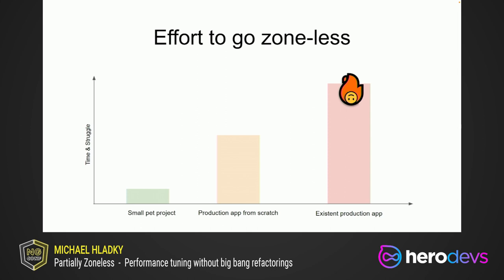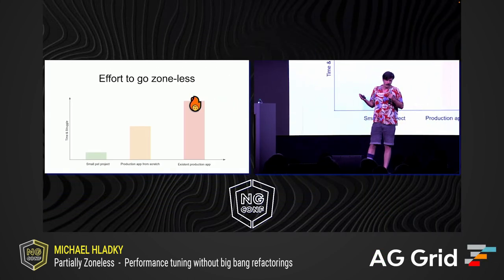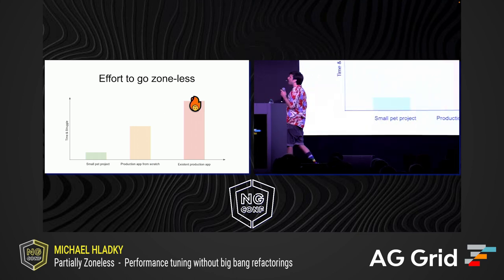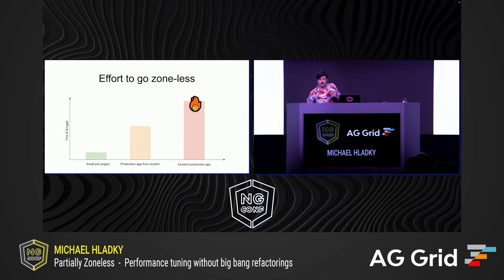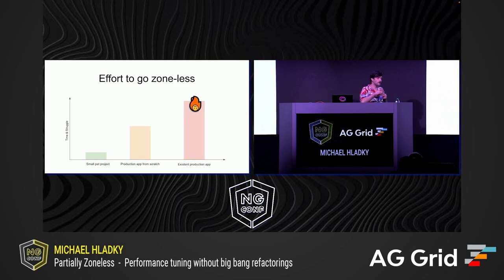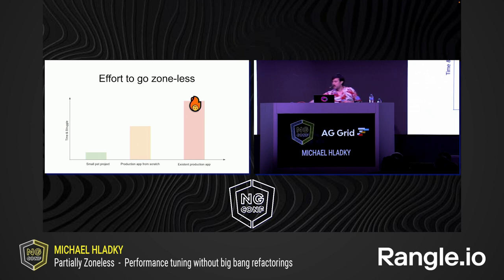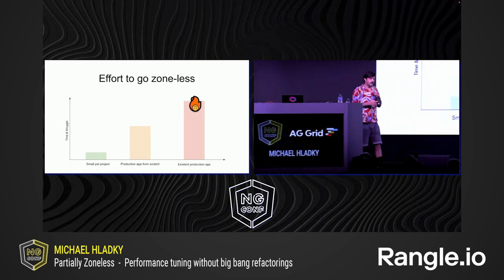How can we go there? It is a lot of effort to go fully zoneless with an application. You can see that a small pet project takes a little bit of effort to go zoneless. But if you have an already existing application that is in some scale, you will not manage to go fully zoneless — it is way too much effort and way too hard to do it. To tackle that problem and still have options to improve performance, I created a toolset.